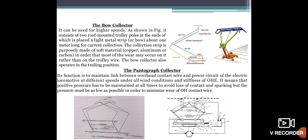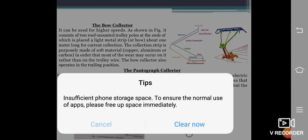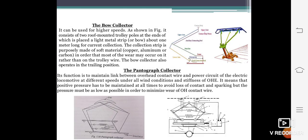Now the pantograph collector. As the name suggests, the design of the collector is a pantograph. Its function is to maintain link between the overhead contact wire and the power circuit of the electric locomotive at different speeds under all wind conditions and overhead line configurations. The positive pressure has to be maintained at all times to avoid loss of contact and sparking, but the pressure must be as low as possible in order to minimize wear of the overhead contact wires.